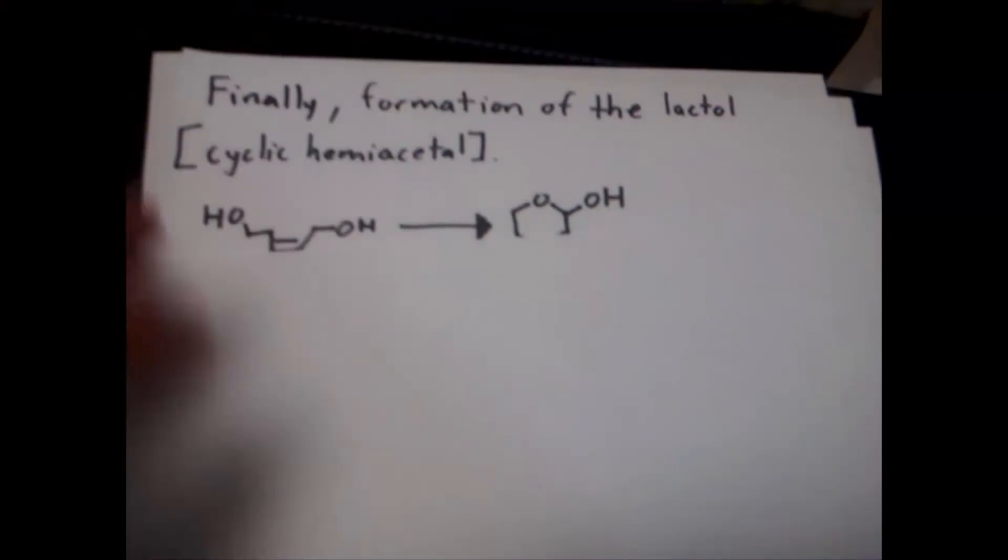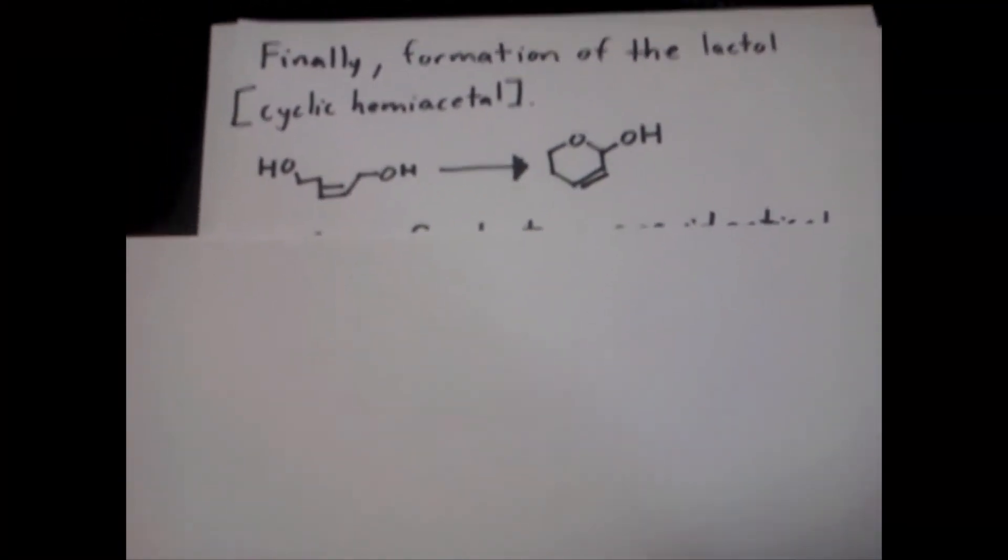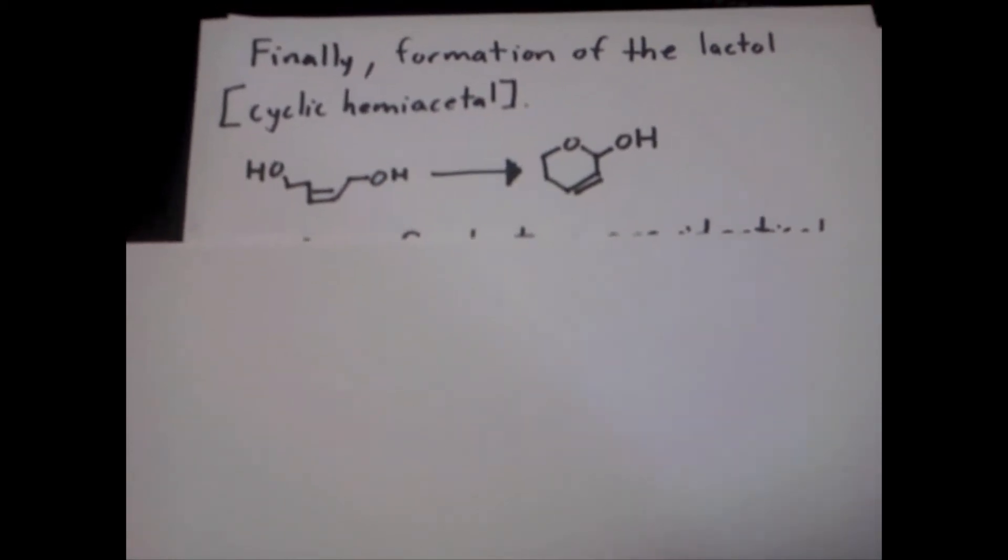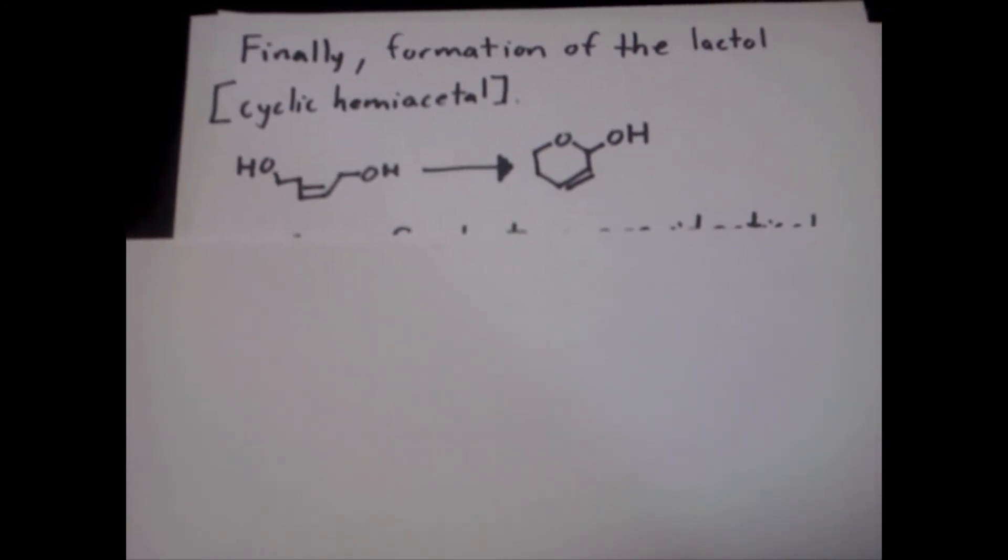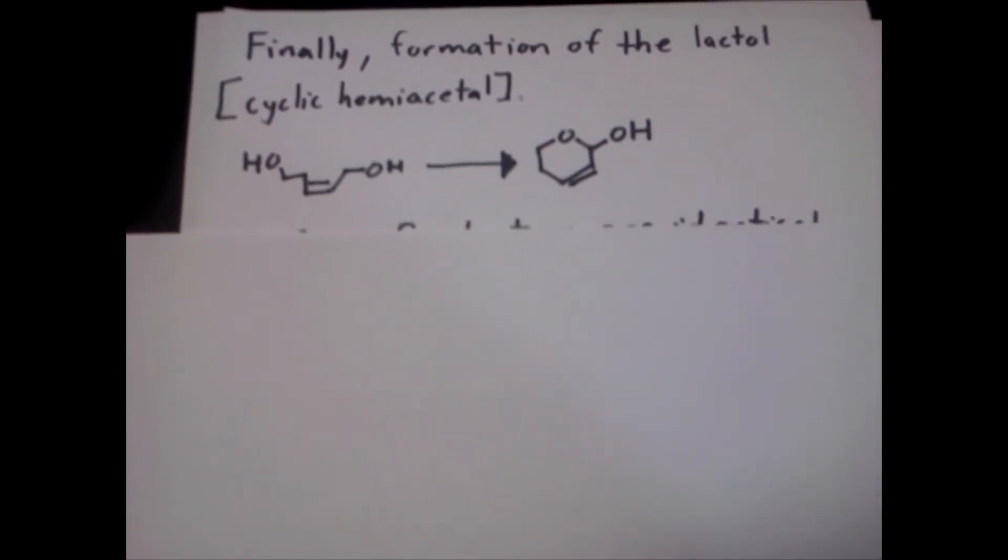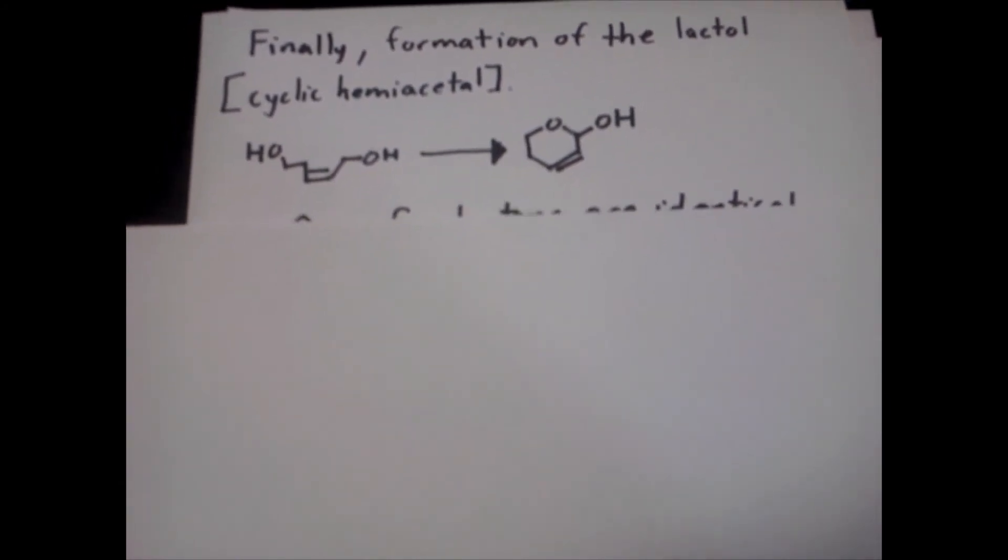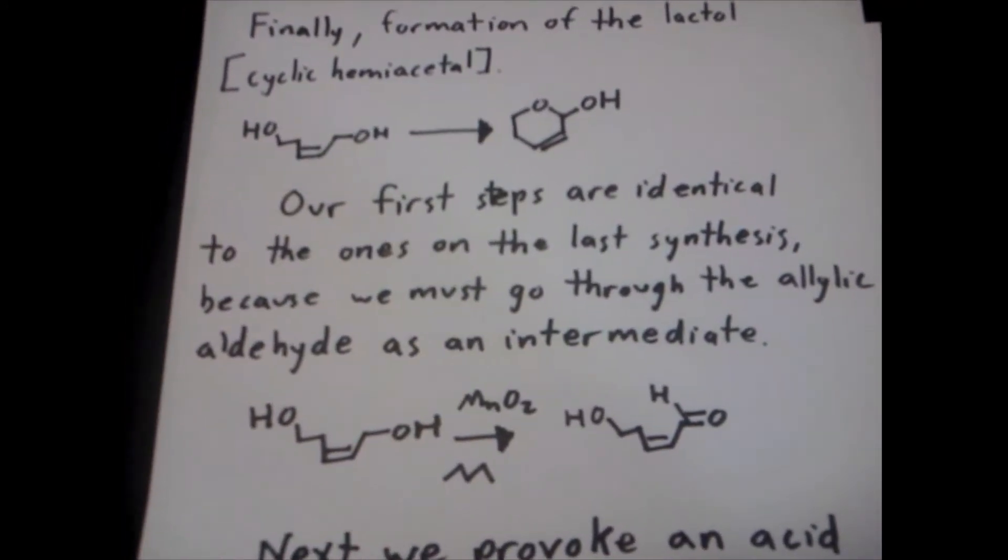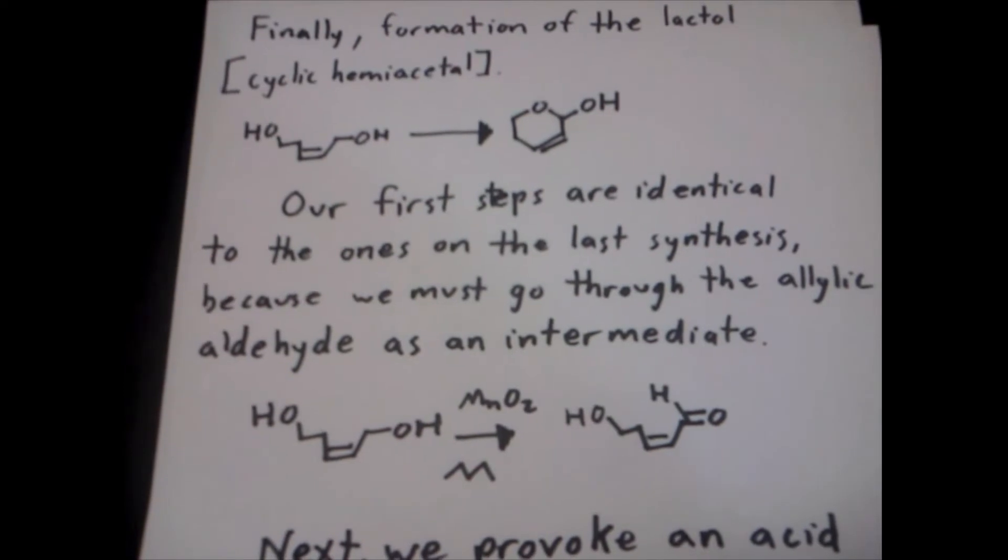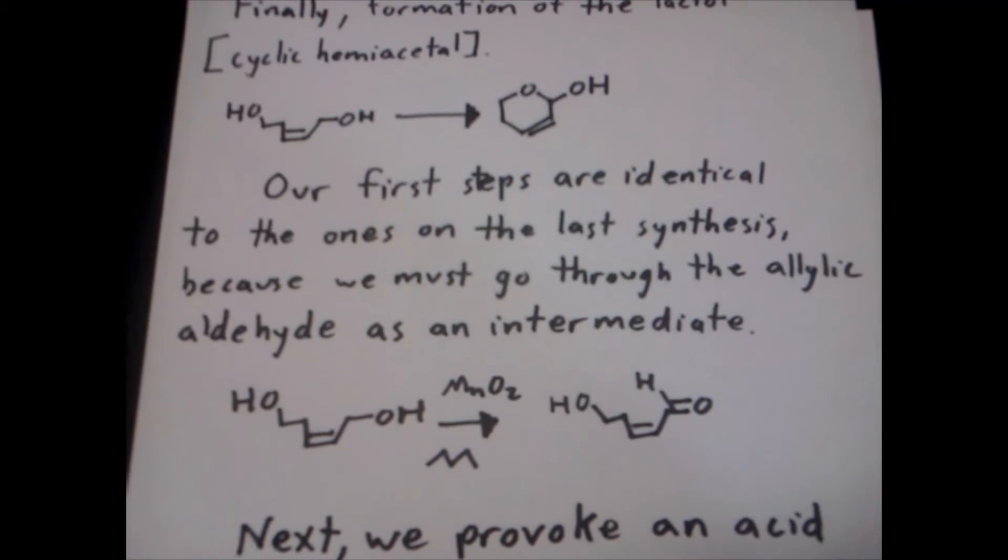And then finally, the more interesting one, the formation of the lactol, which is a cyclic hemiacetal. Now, for this, we have to learn a little something about ring closing. And if we know enough about ring closing, we know that an alcohol on the same molecule will react with an aldehyde in a nucleophilic addition reaction. So our first step here is the same as the one from the previous page. We are going to take our allylic aldehyde that has the alcohol on the non-allylic position free, and we're going to form that. Same as always, manganese dioxide in organic solvent creates this.